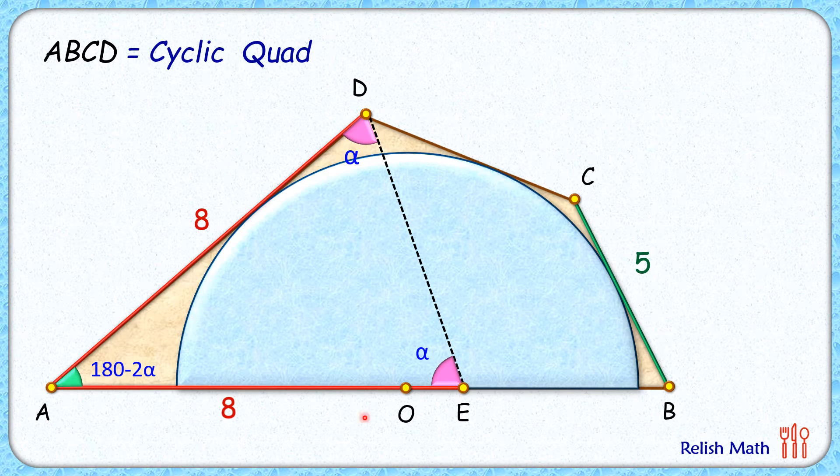Now, quadrilateral ABCD is a cyclic quadrilateral and thus opposite angles are supplementary, so we can say angle C will be 2 alpha.